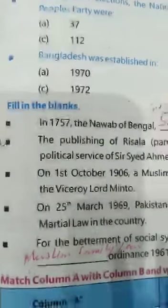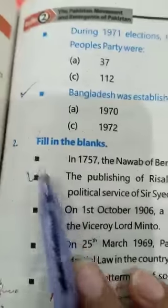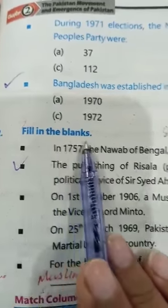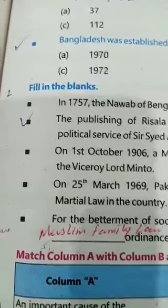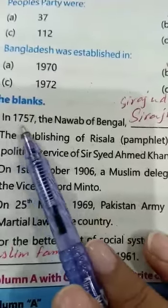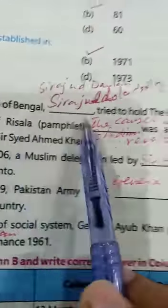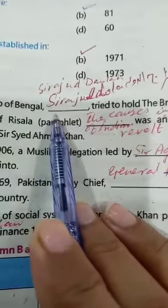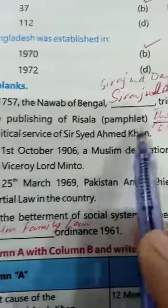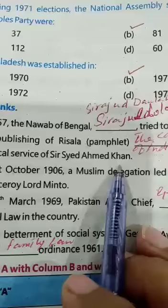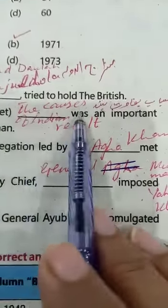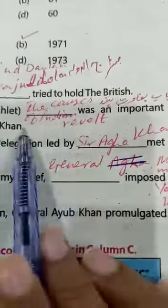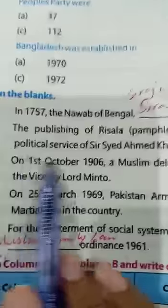Next, question number two of the objective is fill in the blanks. Five blanks are given. Number one: In 1757, the Nawab of Bengal, Sirajud Daulah, tried to hold back the British — fill in the blank with Sirajud Daulah. Number two: The publishing of the Risala pamphlet and writing on the causes of the Indian Revolt was an important political service of Syed Ahmad Khan — fill in the blank with Syed Ahmad Khan.